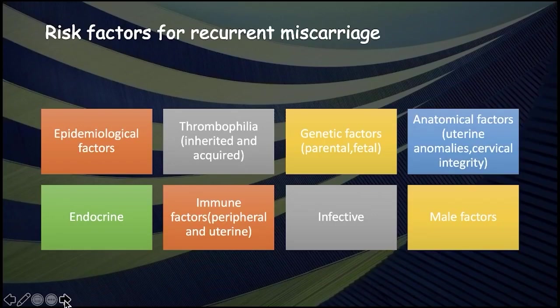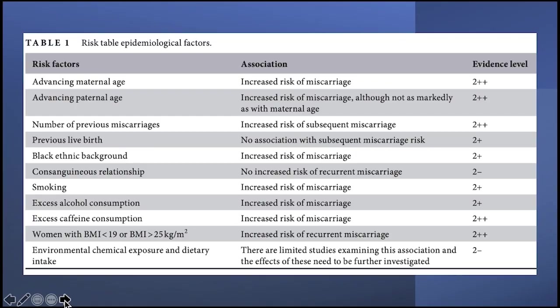The risk factors for recurrent miscarriage include epidemiological, thrombophilia, genetic, anatomical, endocrinal, immunological, infective, and male factors. There is a table about the epidemiological risk factors, and importantly, if there is a previous live birth, there is no association with subsequent miscarriage risk.